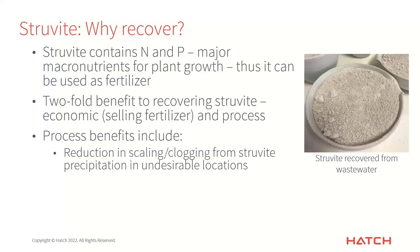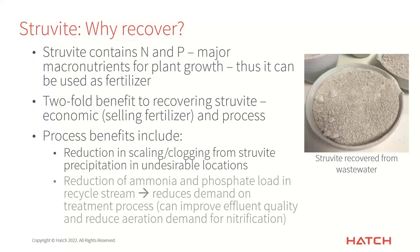This has led to increasing interest in struvite recovery from dewatering side streams at water resource recovery facilities. Struvite contains nitrogen and phosphorus, which are major macronutrients for plant growth, so it can be used as a fertilizer for land application in agriculture. There's a two-fold benefit: an economic benefit from selling the fertilizer and a process benefit from reducing scaling and clogging at undesirable locations, plus reducing the ammonia and phosphate load recycled back to the headworks.